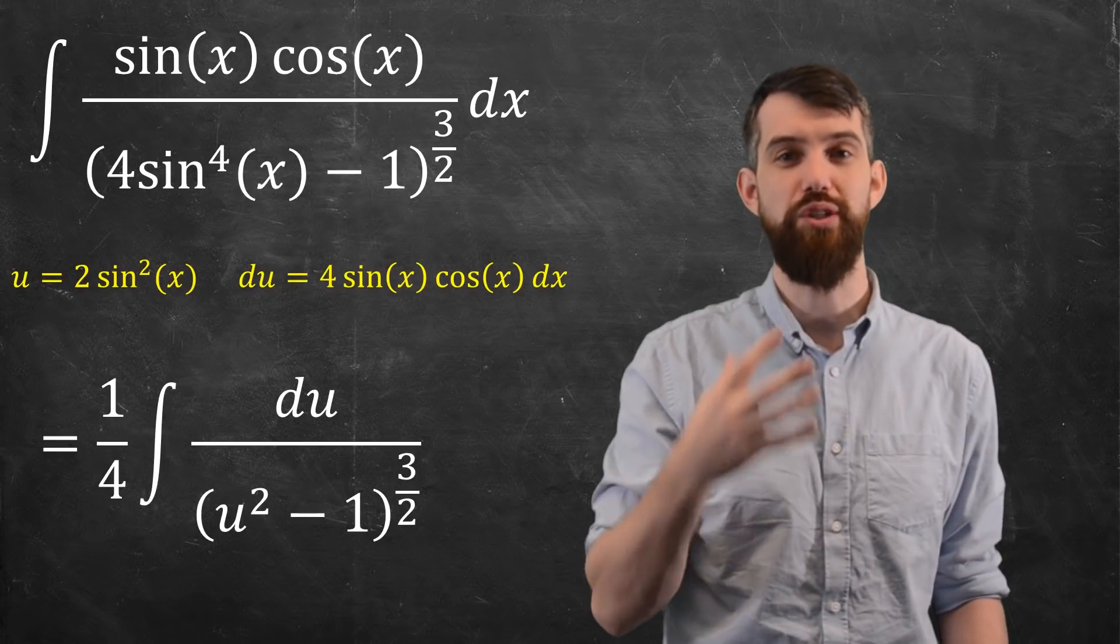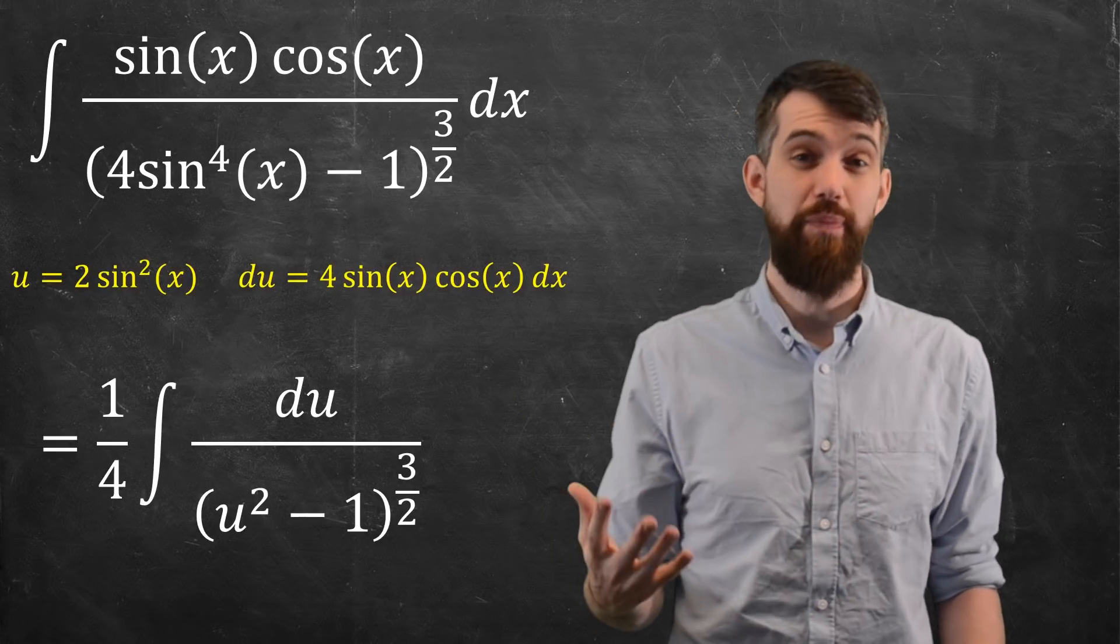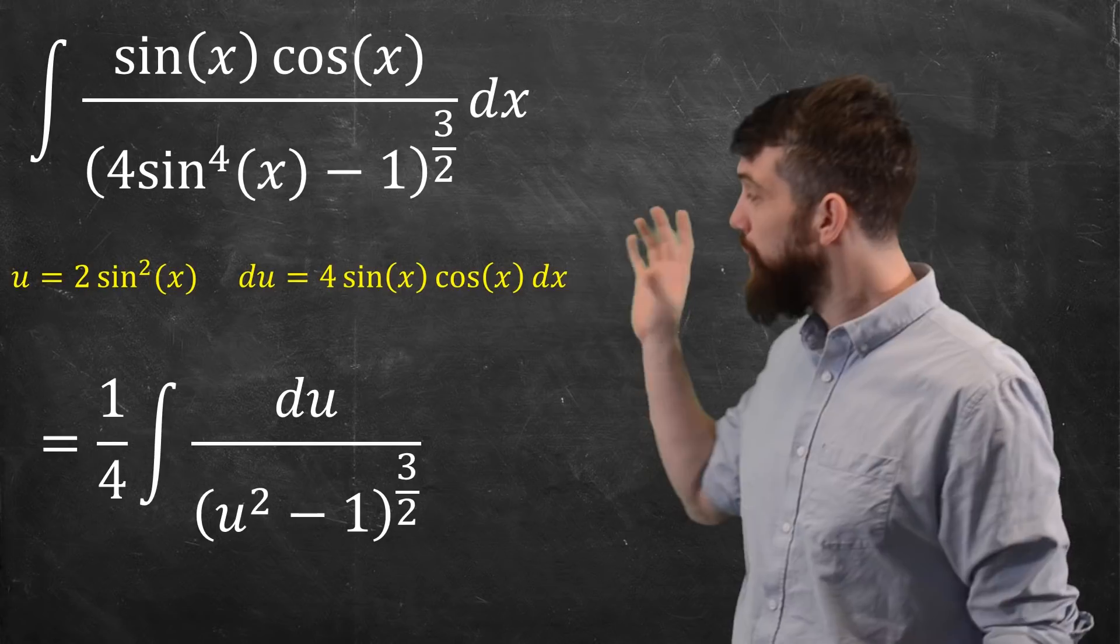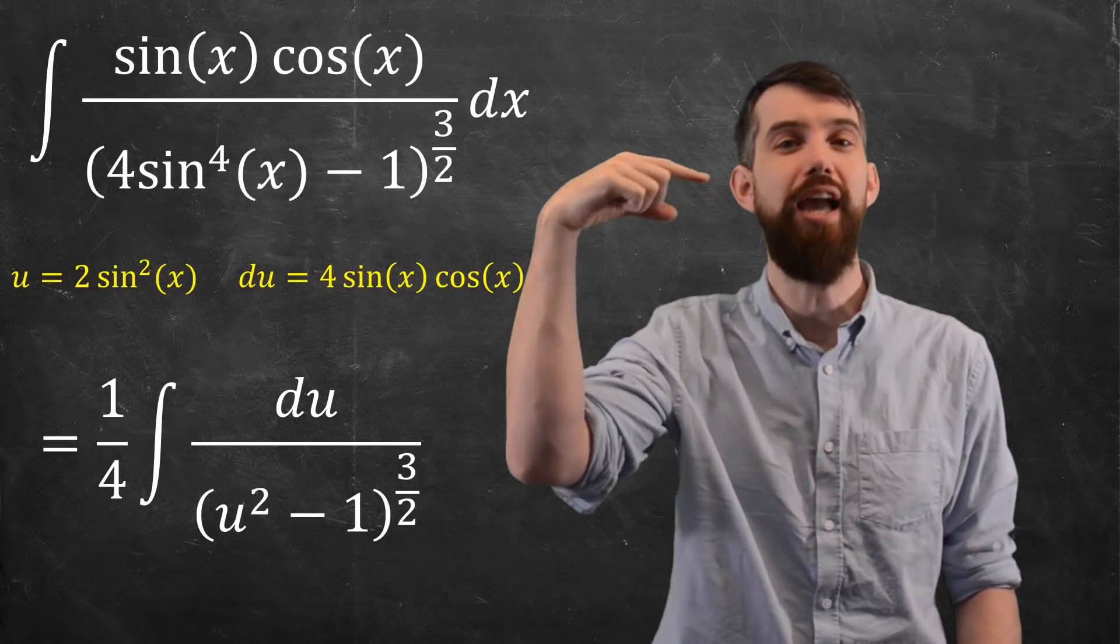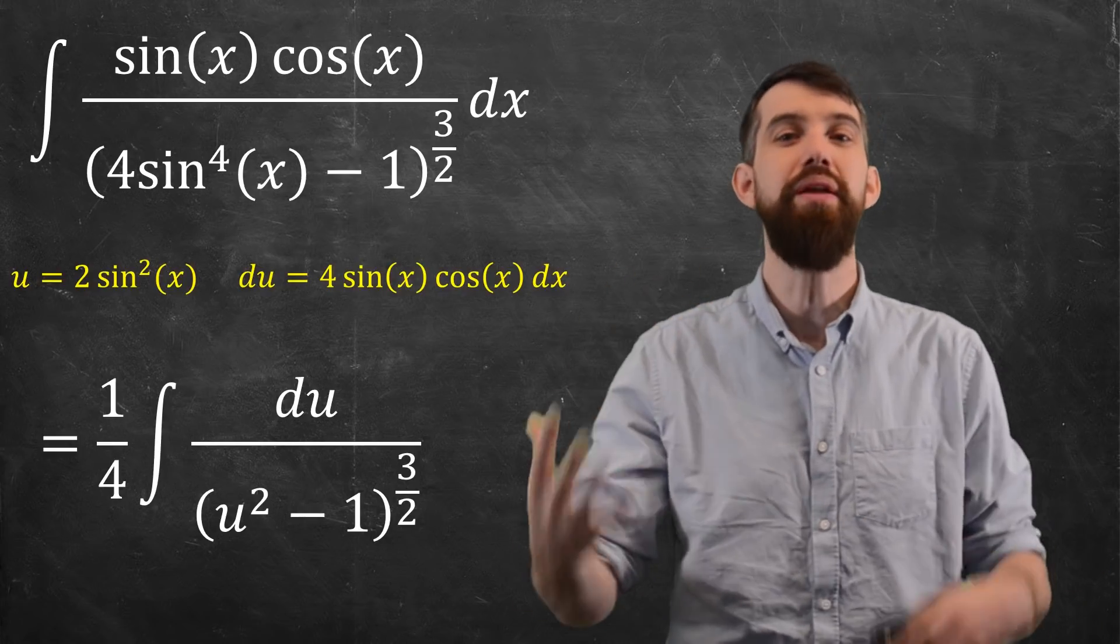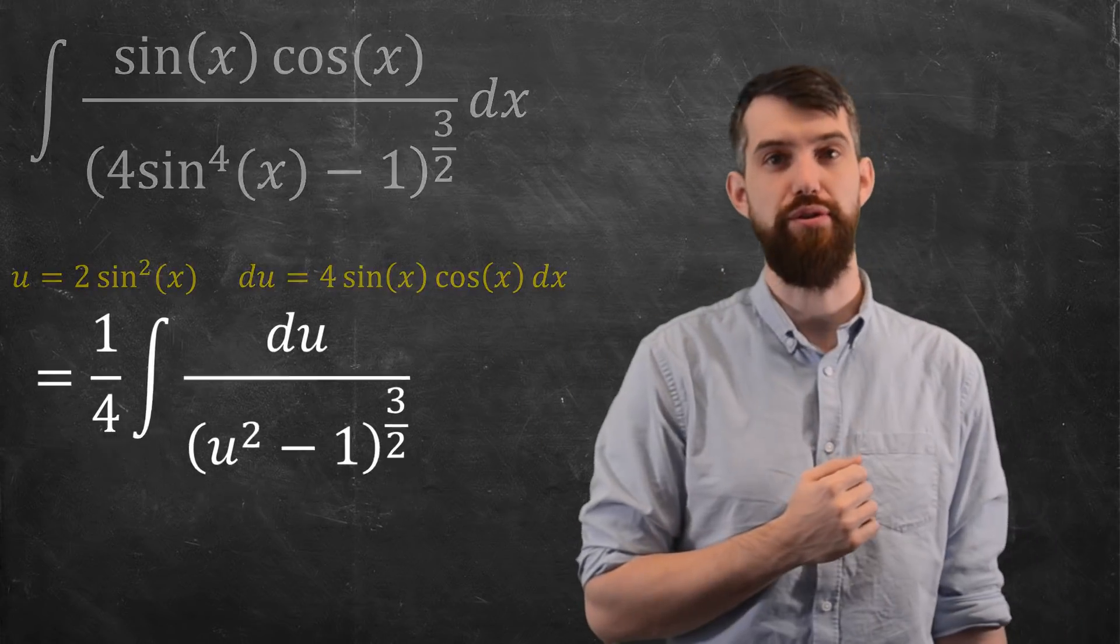And if I go and take all of that and plug it in, because of the four sticking there, you get a one-quarter out the front. And then it's just a du over u squared minus one to the power of three halves. So with a little bit of anticipation, we've chosen a substitution, a u substitution, that puts the integral into a standard form where I can then go and do a trig substitution.